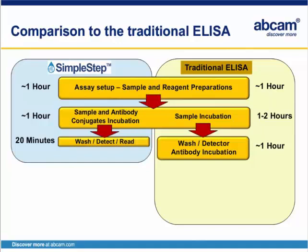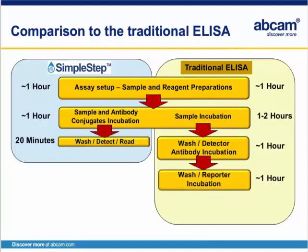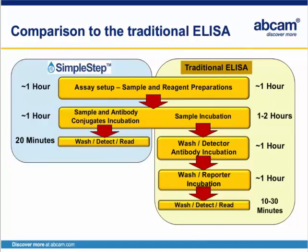The traditional ELISA is washed and the detector antibody is added for an additional one-hour incubation. Most commercially available ELISA products utilize a biotinylated detector antibody, which requires an additional reporter incubation step. A common reporter is a streptavidin molecule conjugated to HRP, requiring an additional one-hour incubation step for the traditional ELISA. In summary, a traditional ELISA can take up to four and a half hours of continuous bench time, while the Simple Step ELISA only takes about two and a half hours — roughly half the bench time.